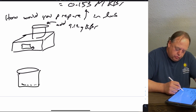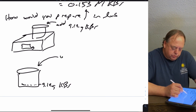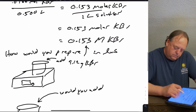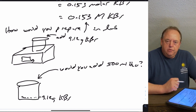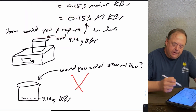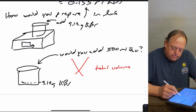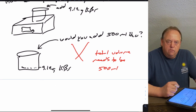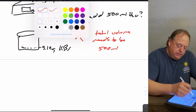Now you have 9.12 grams of KBr in a beaker. If you wanted to prepare this in lab, would you add 500 mL of water directly? The answer is no — because your total volume needs to be 500 mL, and if you add 500 mL of water on top of the KBr, the total volume will be a little more than 500 mL, since the KBr itself occupies some volume.